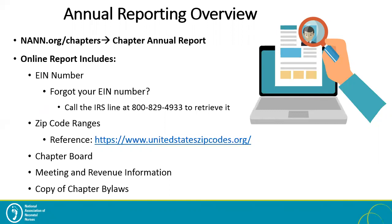The online form also requests the zip code ranges associated with your chapter. Once we have the appropriate zip codes on file, the national office can provide you with ongoing regular reports of your chapter's roster — your chapter members as well as prospect members within your region, meaning NAN members that have not joined your chapter yet. The zip code information is a requirement for our chapter reporting, so it's highly important that you complete this. A great resource is UnitedStatesZipCodes.org, which can really help you generate those zip codes within your region.